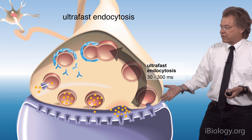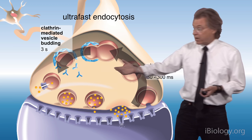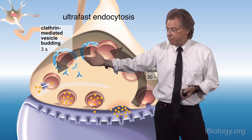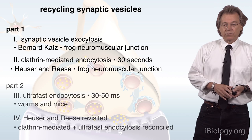In ultrafast endocytosis, the synaptic vesicle membrane is recovered very rapidly — about 30 to 3800 milliseconds — generating a synaptic endosome. That synaptic endosome is then resolved by clathrin-mediated vesicle budding, which is also a very fast process — it only takes about three seconds. When that budded vesicle is uncoated, we've regenerated a synaptic vesicle after only five seconds. This makes a synapse able to run at much faster speeds than with clathrin-mediated endocytosis alone.